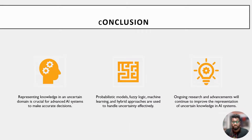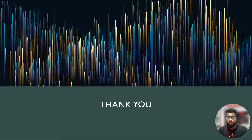In conclusion, representing knowledge in an uncertain domain is crucial for advanced AI systems to make accurate decisions. Probabilistic models, fuzzy logic, machine learning, and hybrid approaches are used to handle uncertainty effectively. Ongoing research and advancements will continue to improve the representation of uncertain knowledge in AI systems. Thank you for listening, and I hope you found this informative. Please like, share, and subscribe — I'll see you in my next video.